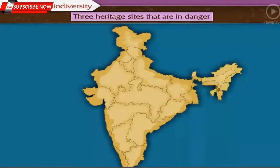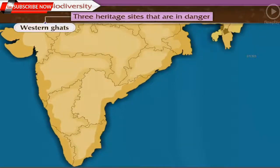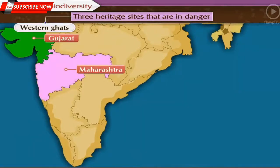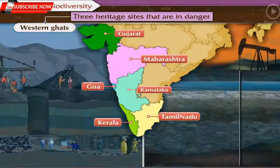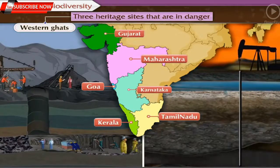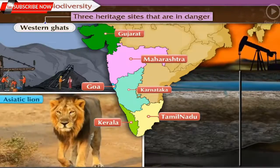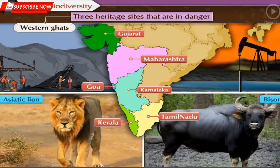Three heritage sites that are in danger. Western Ghats, ranging over Gujarat, Maharashtra, Goa, Karnataka, Tamil Nadu, and Kerala, is in danger due to activities like mining and extraction of natural gas. As a result, the habitat of Asiatic lions and bisons is also in danger.